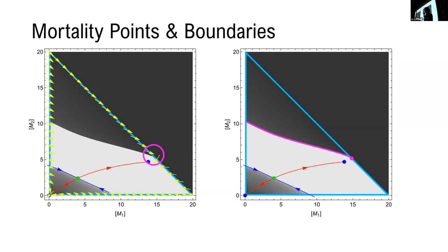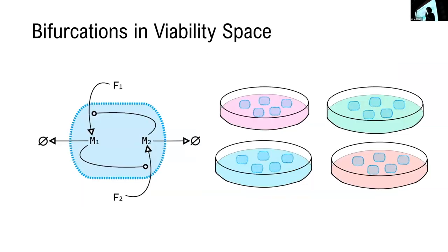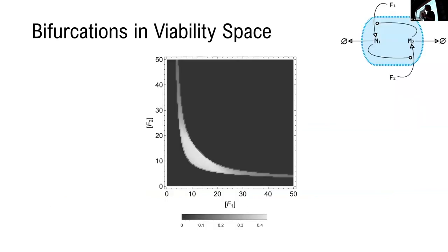So this is for a single fixed environment, but we can also ask what would happen in different types of environments for the protocell system. And this effectively equates to looking in parameter space. Here we're looking at the different combinations of the two fixed food concentrations, and for every pixel, we're sampling a protocell.